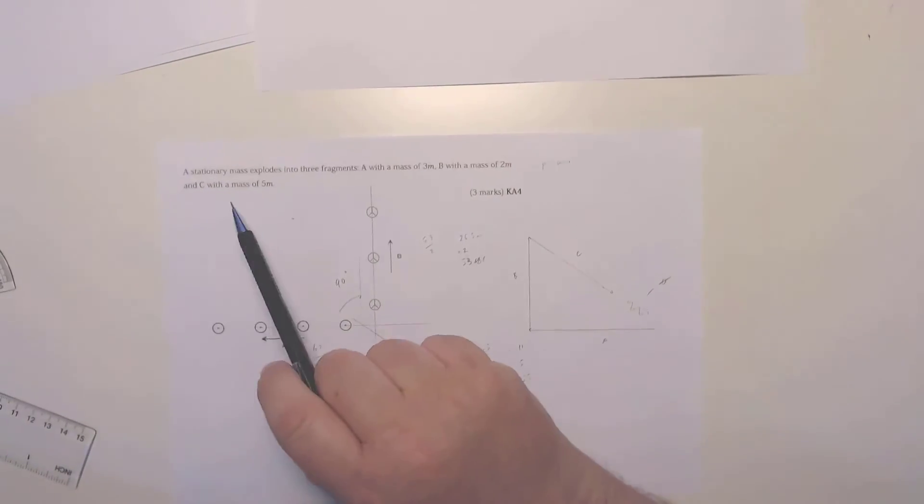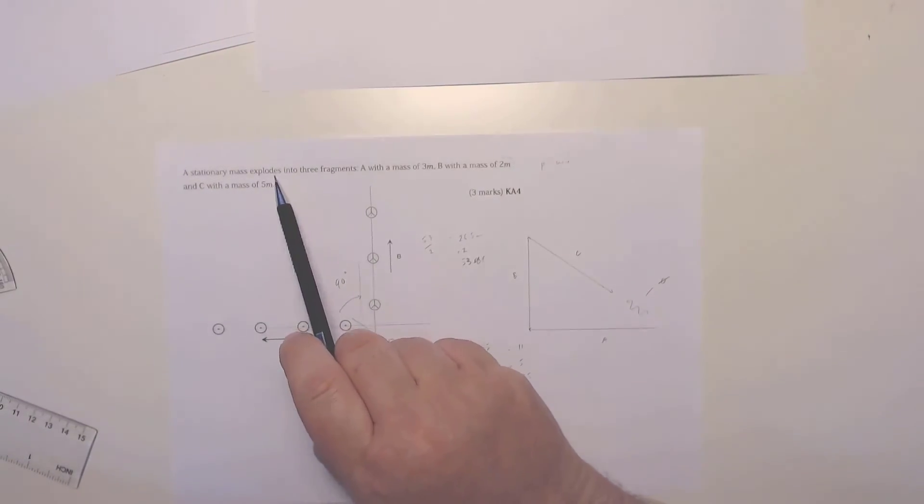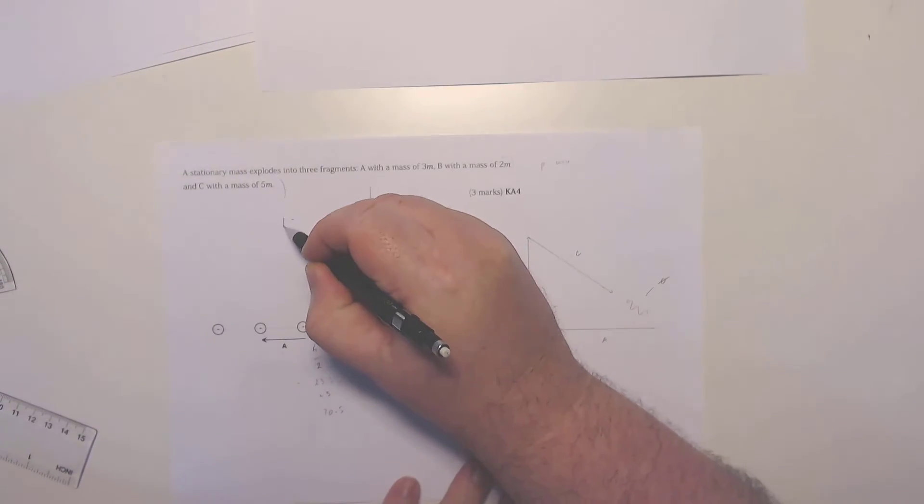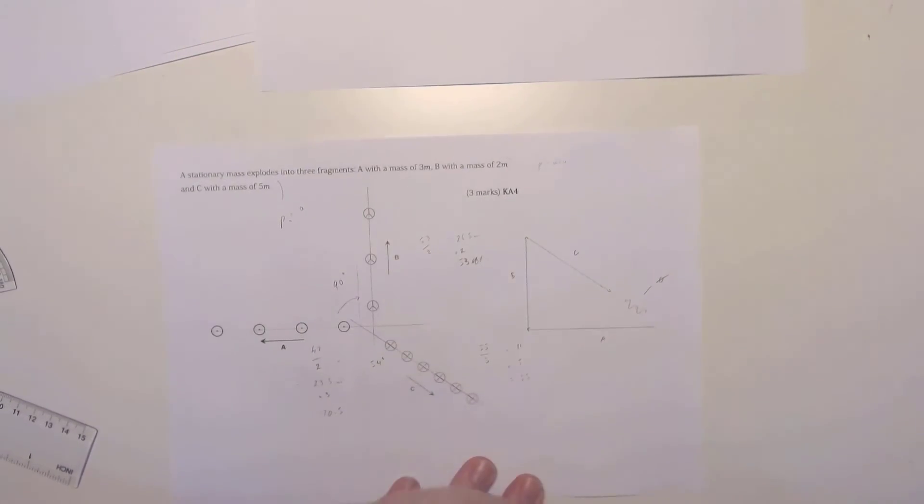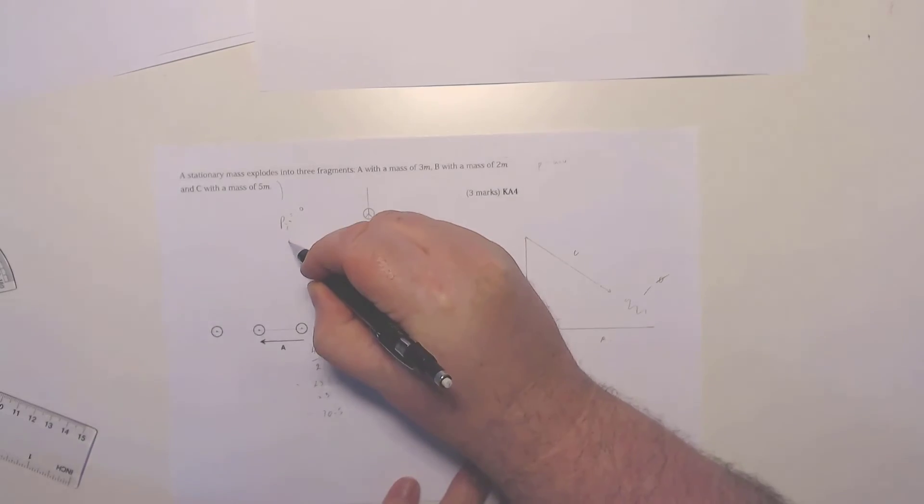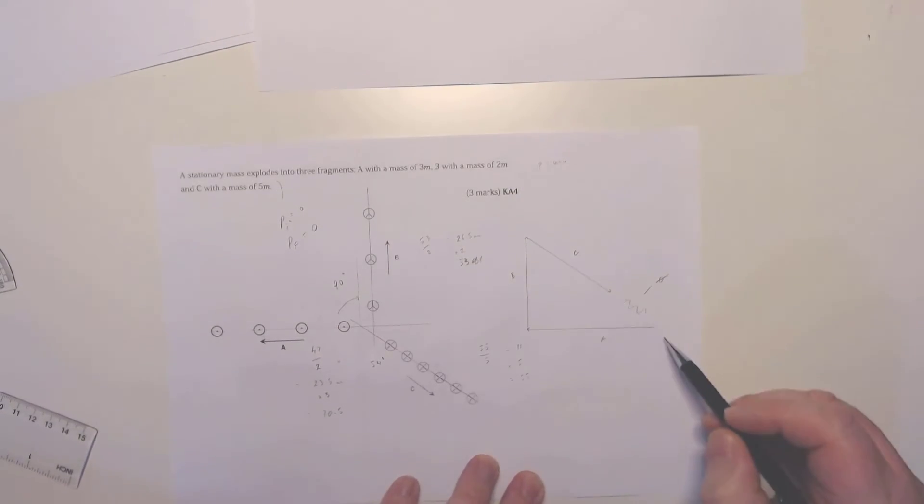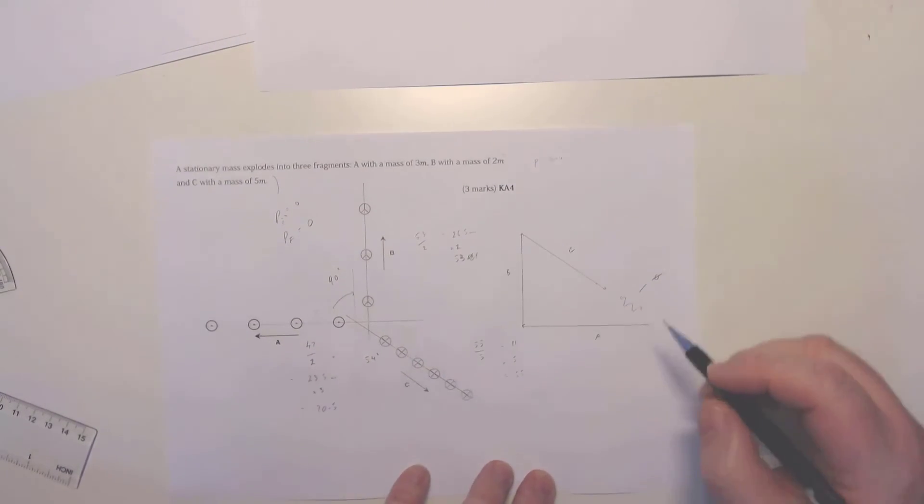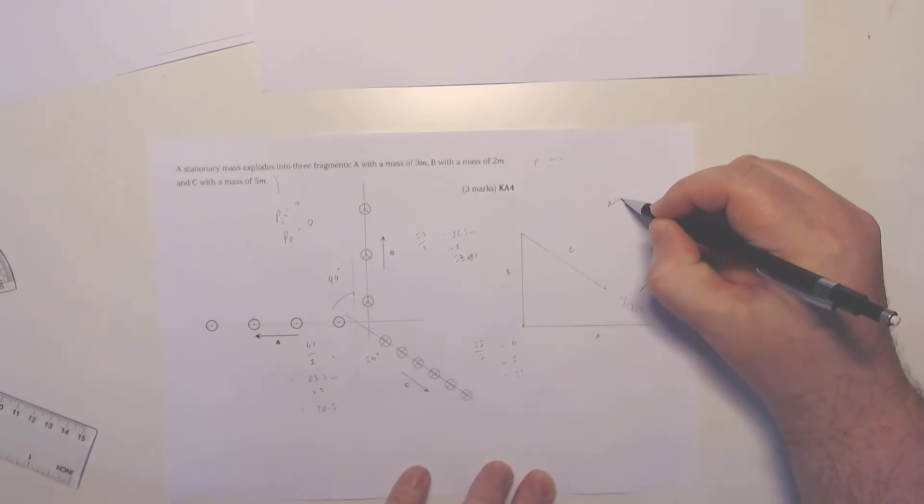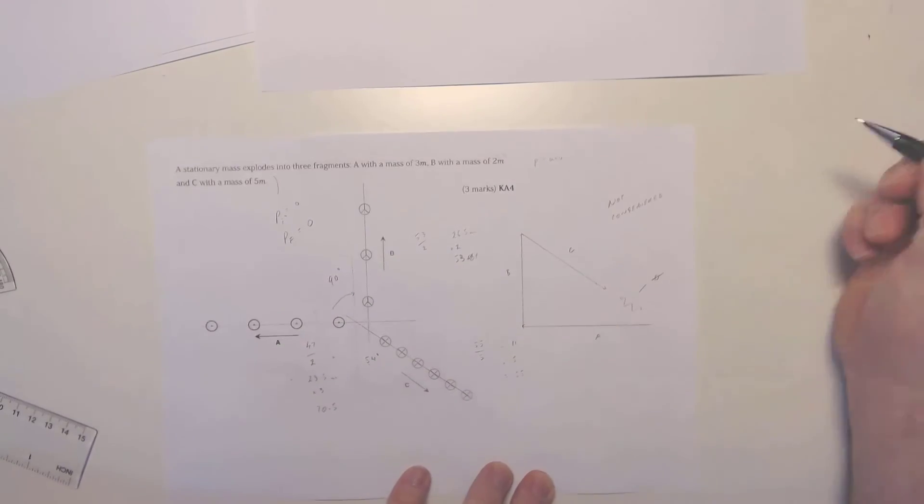Now, why does it need to return to zero? Because this is an explosion, so that means all the momentum at the start was equal to zero. So therefore, the final momentum should also be equal to zero, which means it should return to its origin point. So in this case here, momentum is not conserved.